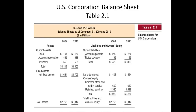On the liability side, we have accounts payable, notes payable, and we could have taxes payable. Then we have the longer-term liabilities — long-term debt — and then you have owner's equity, retained earnings, etc.